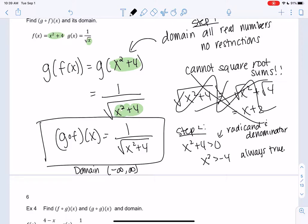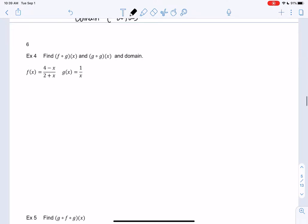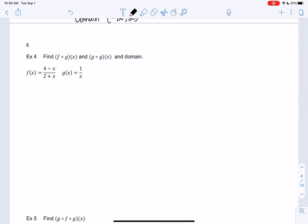Cool, should we try one more in this video, and then take a break? So let's do f of g, and then we'll do g of g. That's something we haven't done yet. So let's do f of g first, because we've done that before.